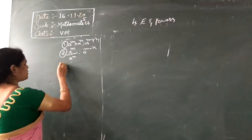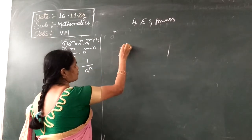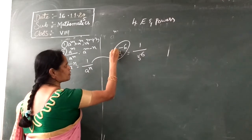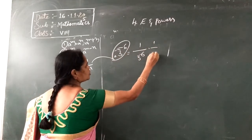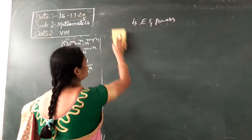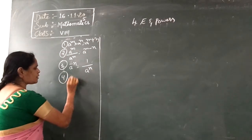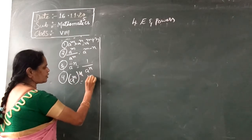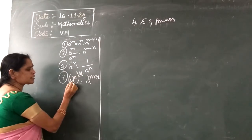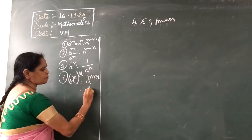The third formula is: A to the power of minus N is equal to one by A to the power of N. For example, three to the power of minus six equals one by three to the power of six. The fourth formula is: A to the power of M, whole to the power of N, equals A to the power of M into N — meaning the two powers are multiplied.